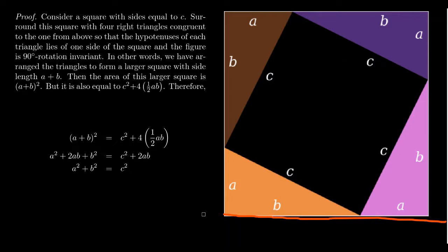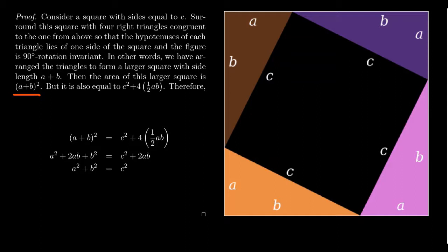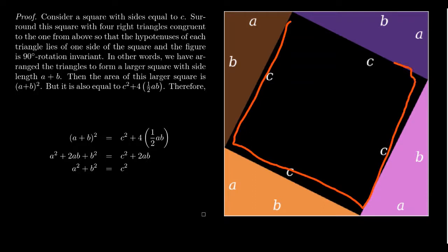The order of A plus B doesn't matter. So this larger square has all sides equal to A plus B, and therefore its area is (A + B)². That's how you find the area of a square — you square its side. On the other hand, the inner black square has side length C, so its area is C².